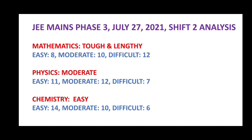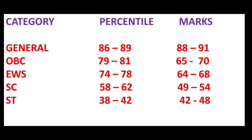As usual, a little sigh of relief from the Chemistry part. Chemistry questions are said to be easy, and most questions have come from NCERT books by and large. The total number of easy questions here are 14, moderate questions are 10, and difficult questions are 6.